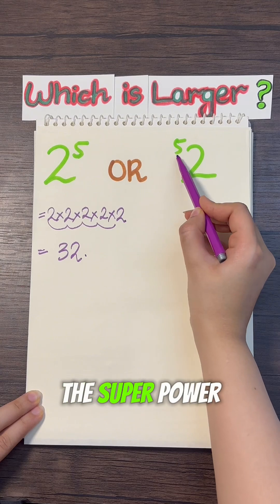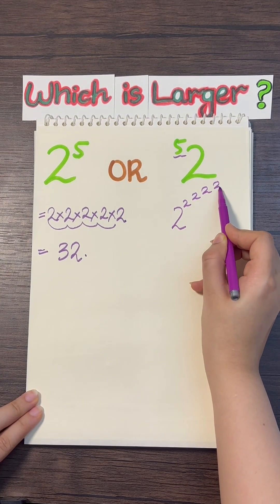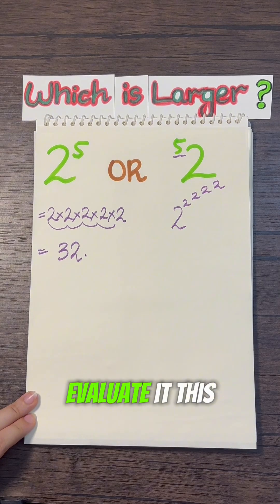This means here is 2 to the superpower 5, which is 2 raised to the 2, raised to the 2, raised to the 2, and raised to the 2. You need to evaluate it this way.